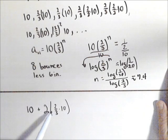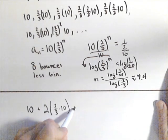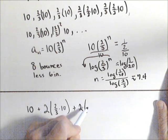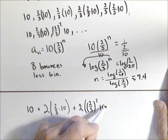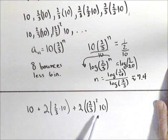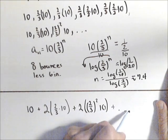Plus two times two-thirds squared times 10, again once for up, once for down, and so on and so forth.